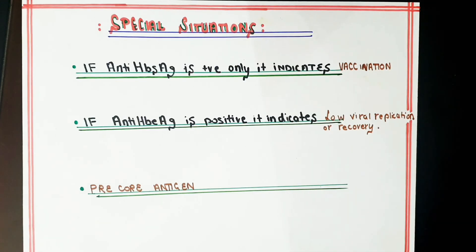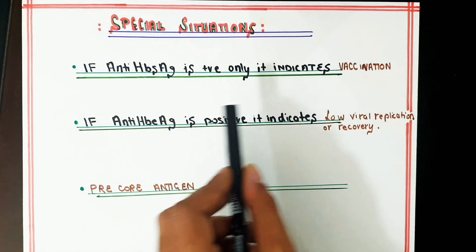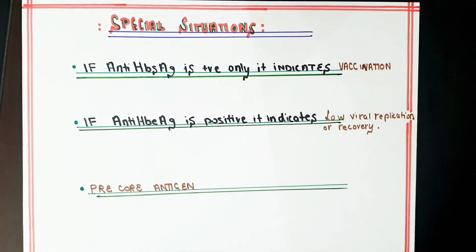A special circumstance: if anti-HBs is the only positive marker — HBs antigen and all other antigens and antibodies are negative — this indicates the person has undergone successful vaccination.